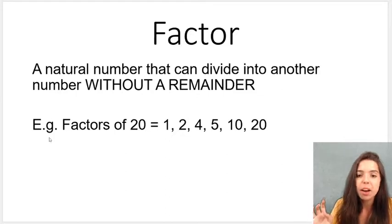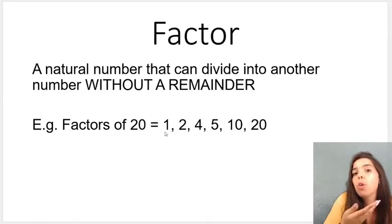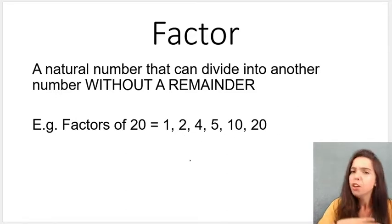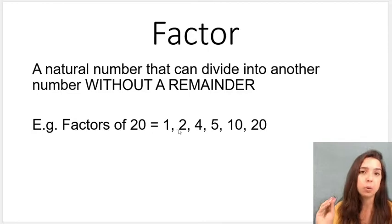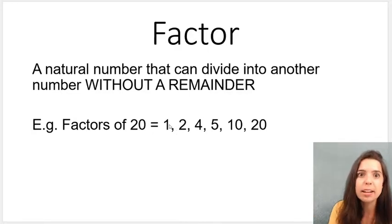So factors are natural numbers that can divide into another number without leaving a remainder. So if we look over here I've listed the factors of 20. The factors of 20 for example are 1, 2, 4, 5, 10, and 20. 3 for example is not a factor of 20 because although I can say 20 divided by 3, there'll be a remainder left over.